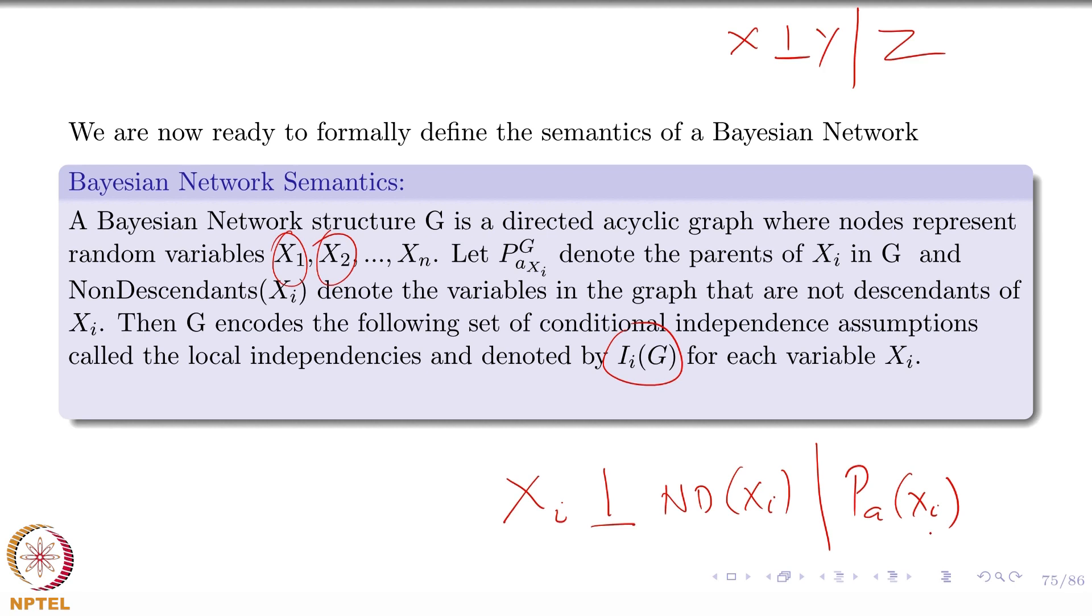So this is the formal semantics of a Bayesian network. Once you have the Bayesian network, you can just read off these independence assumptions from the Bayesian network.